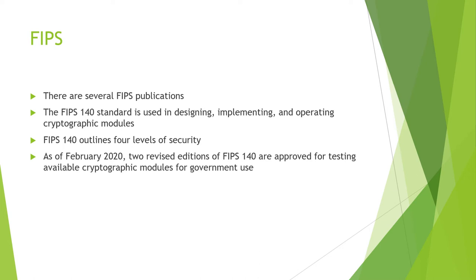FIPS-140 outlines four different levels of security. As the level increases, they're not necessarily building on top of one another, but a higher level does go through additional testing for a specific use case. Level one is the lowest, covering basic security features within cryptographic modules. Level two improves on the physical security aspect, followed by level three which is an enhanced version of level two. Typically when you purchase a product it will be level three. Level four is the highest — the higher you go, the more secure it is and the more testing it has to go through.